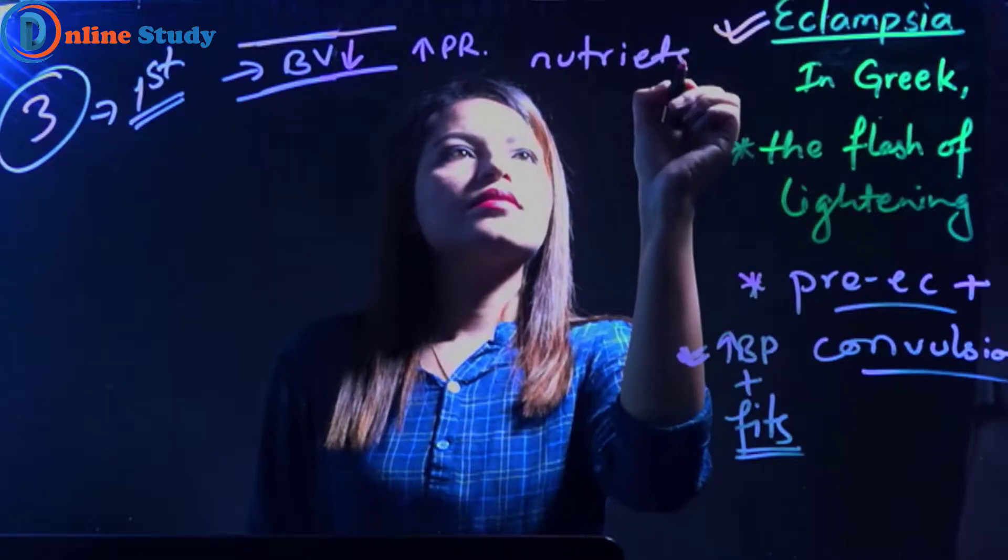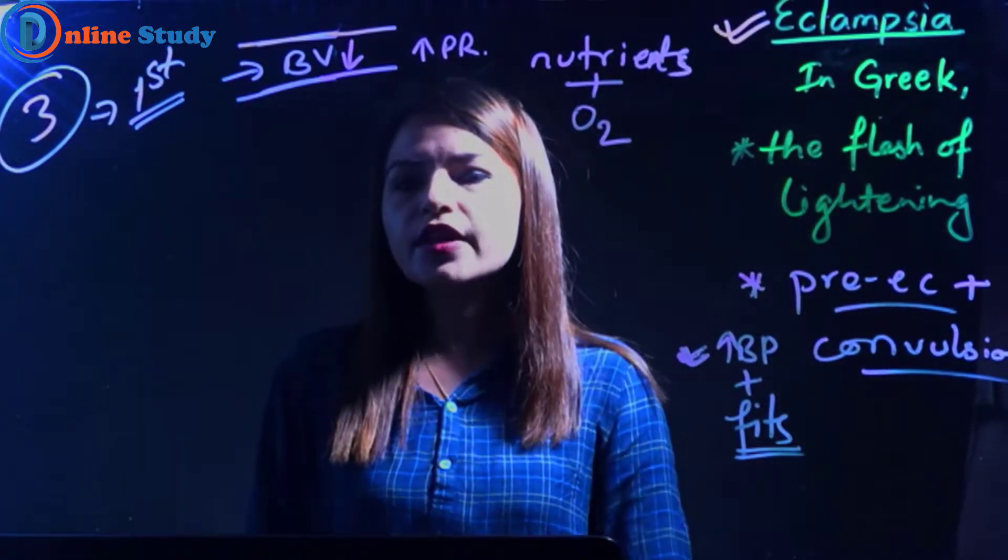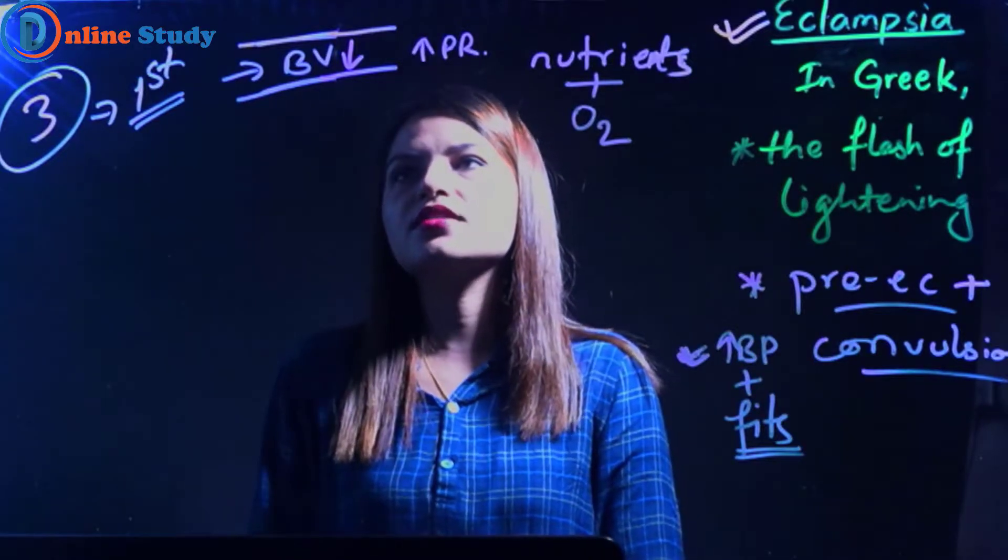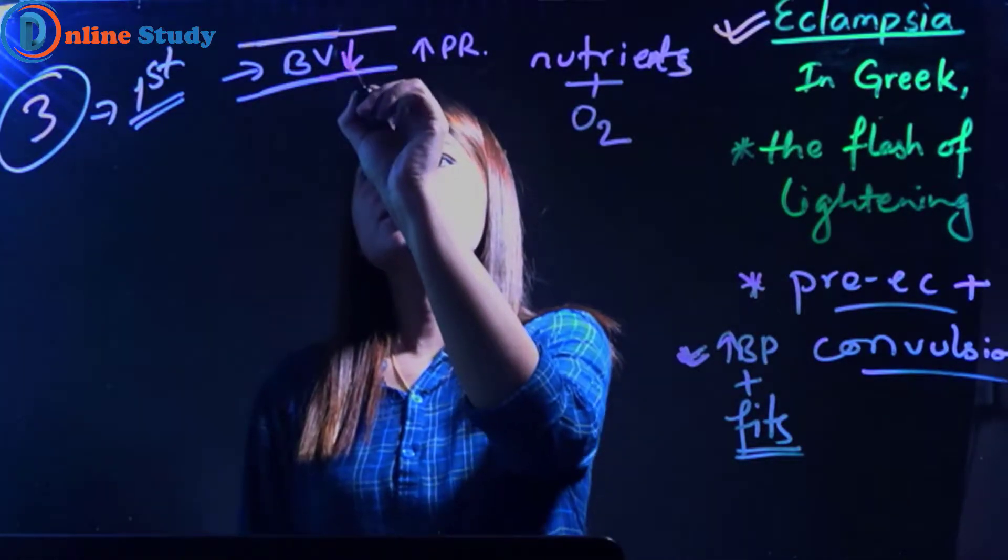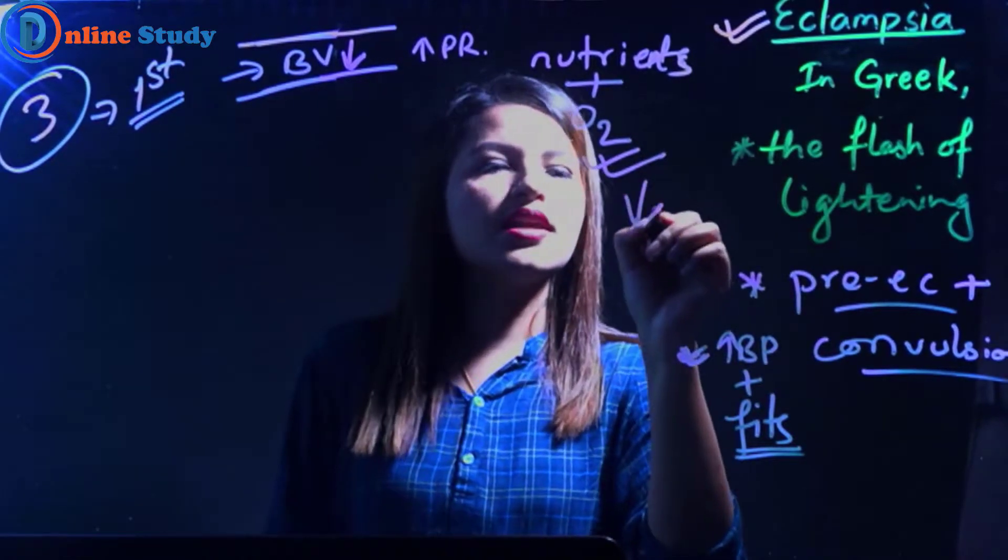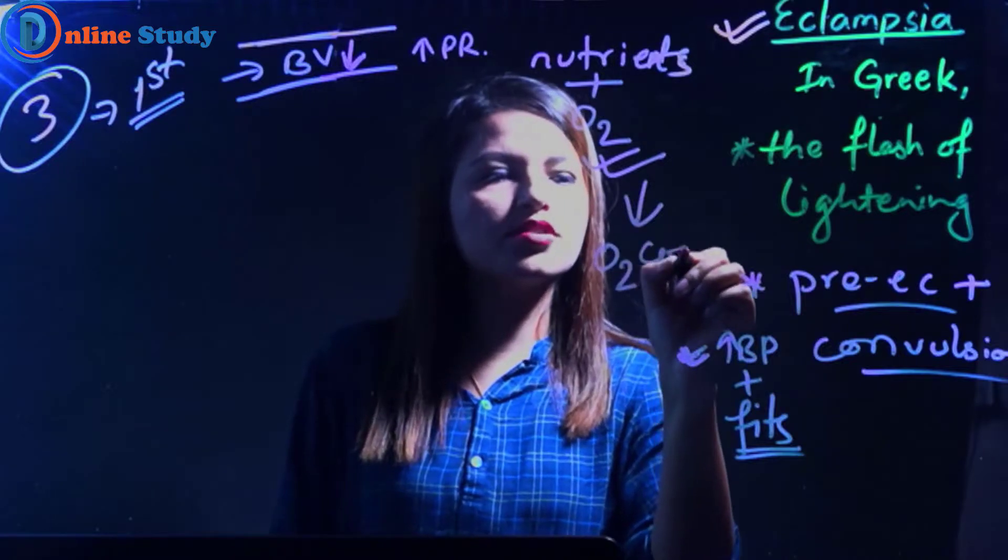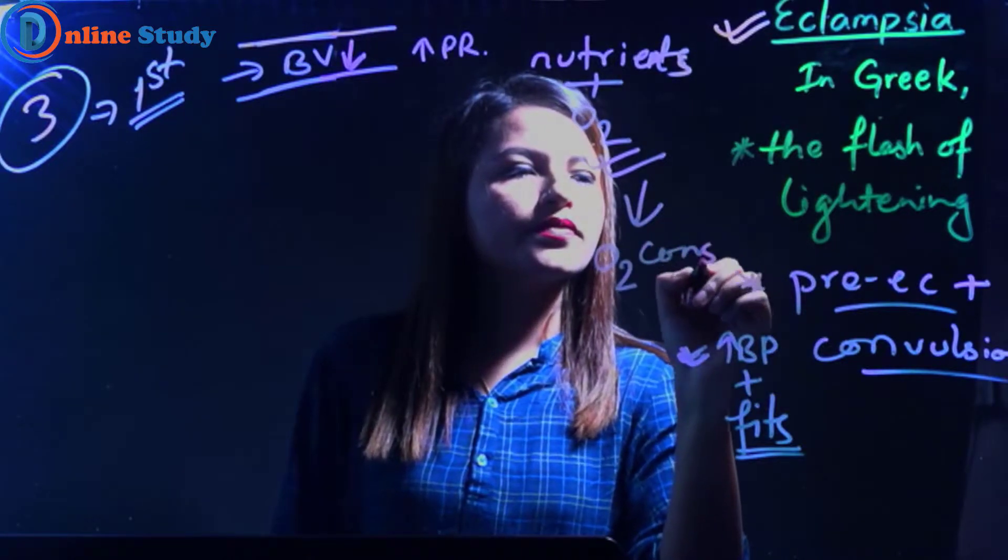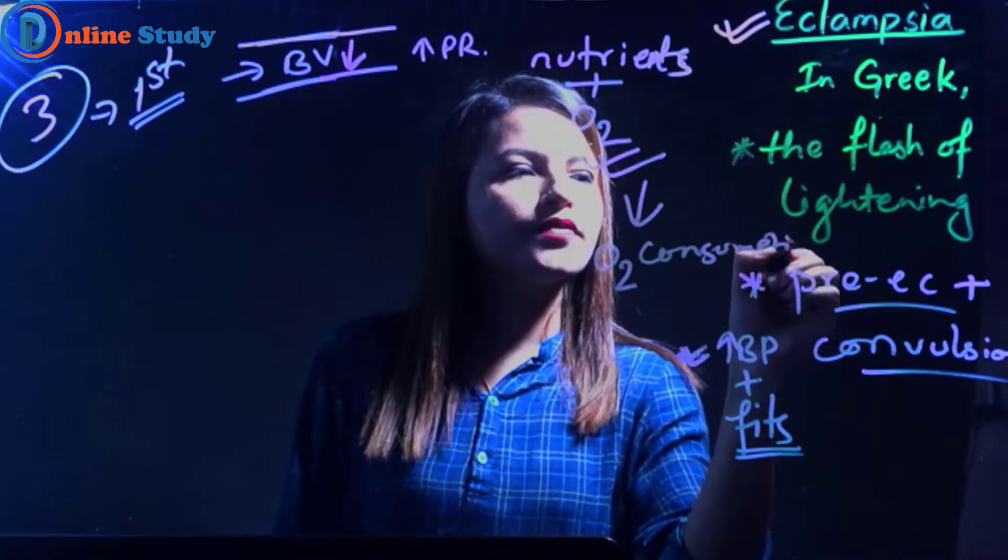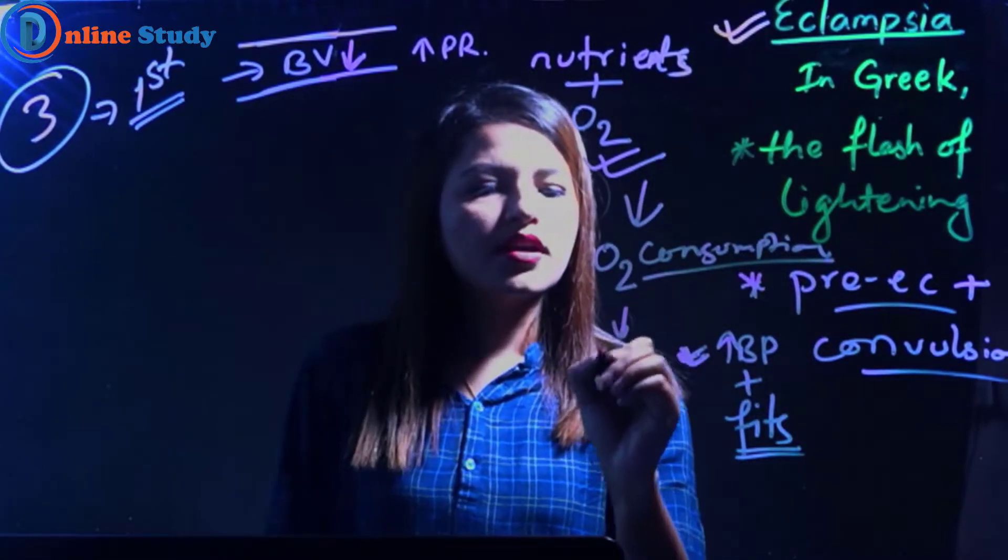nutrients plus oxygen to different tissues and body organs. When there is reduction in blood flow, the transportation of oxygen becomes less. There is a reduction of oxygen consumption, and this causes inflammation.